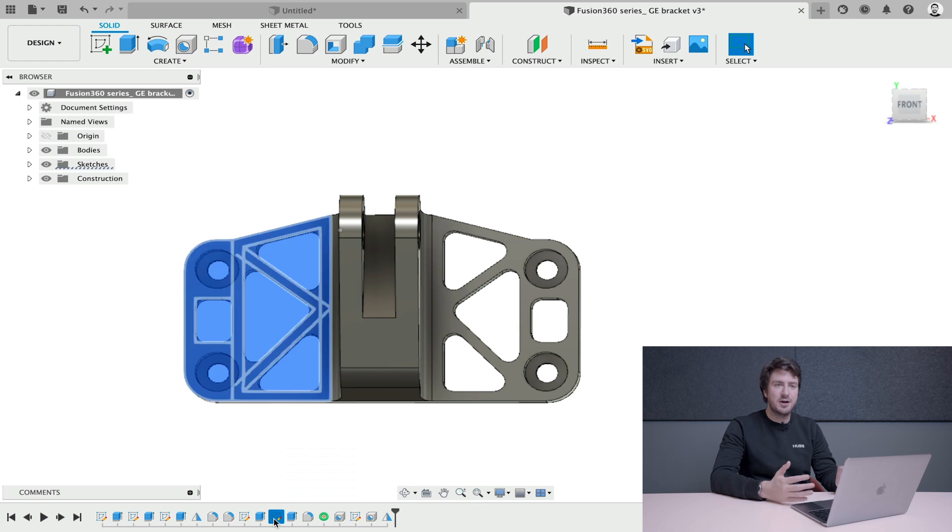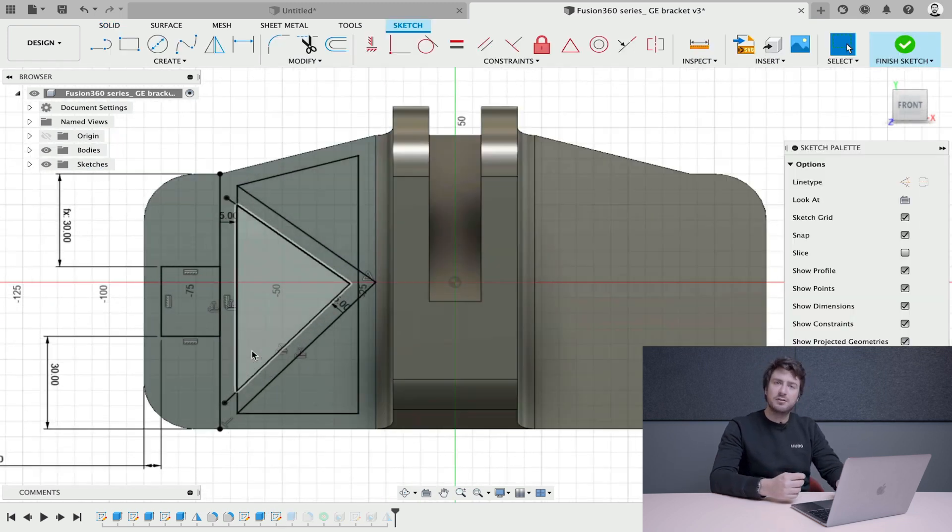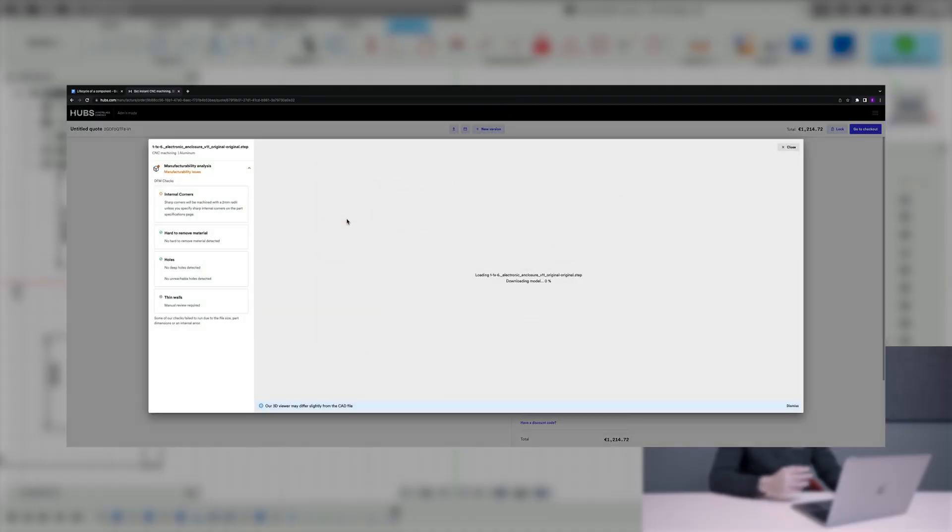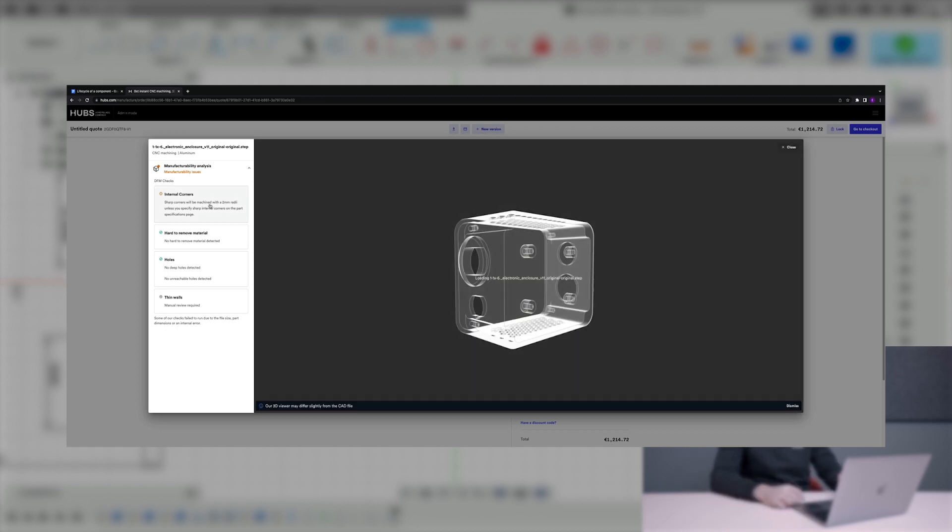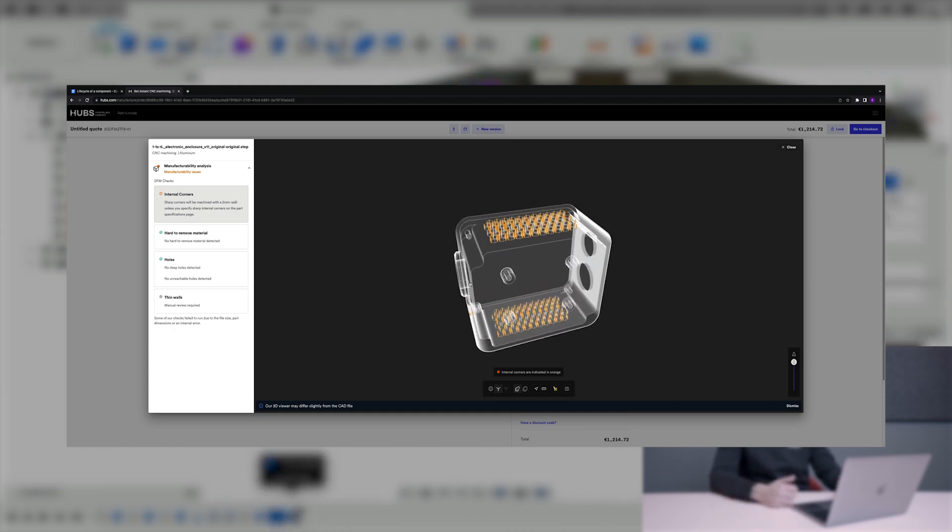First of course you need a design that is optimized for CNC like this base bracket here. You think about volumes that are hard to remove or some features that might be hard to machine and might require more complex and expensive processes. You can always upload your CAD file on the Hubs platform and while you can also receive instant pricing, you can also get what we call DFN feedback which is super useful and important to make sure your design can actually be made with the selected technology.